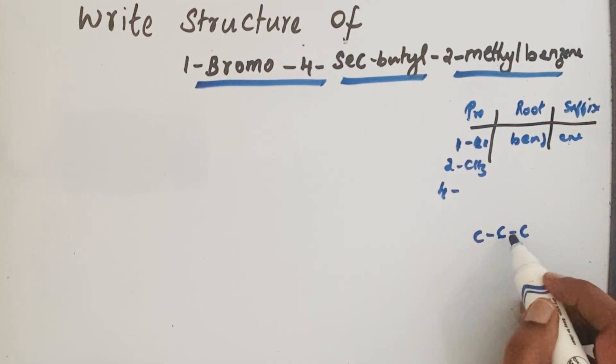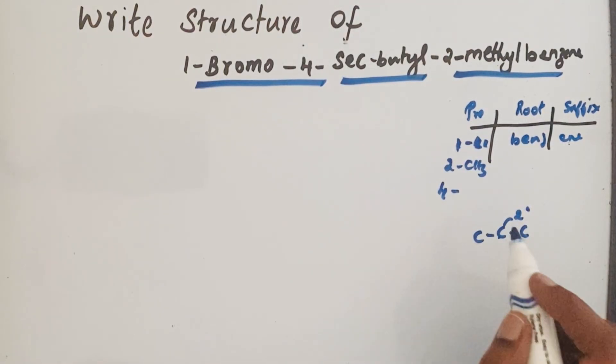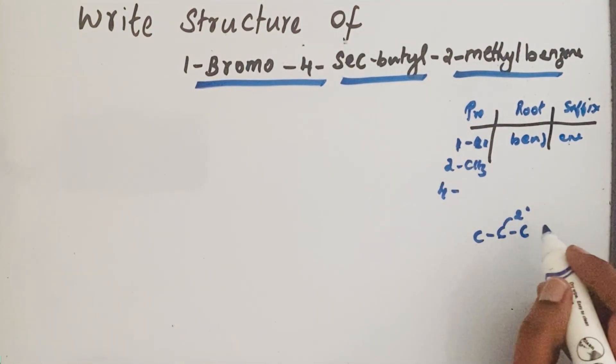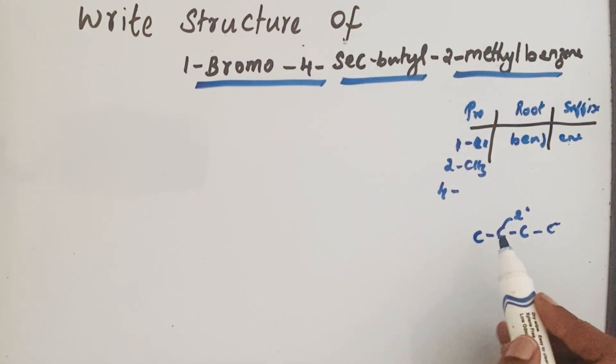So here we have secondary butyl. Butyl means we know that there are four carbon atoms, so that means one more carbon must also be there. This secondary carbon must attach to the benzene ring.